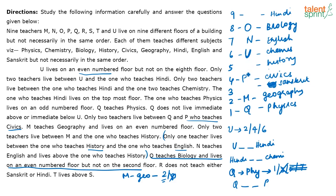We are left with two persons to place. R does not teach Sanskrit or Hindi, so R must teach history and is on floor 5. We are then left with T and S for floors 3 and 9. It is given that T lives on a floor above S, so S must be on floor 3 teaching Sanskrit and T must be on floor 9 teaching Hindi.